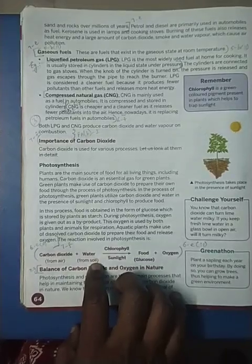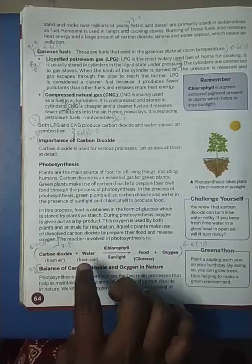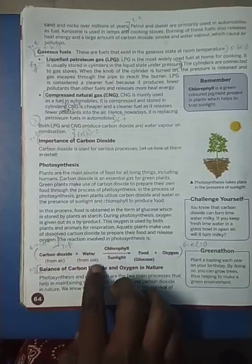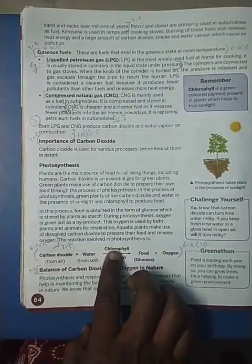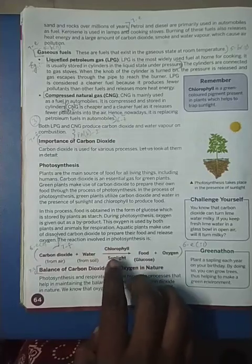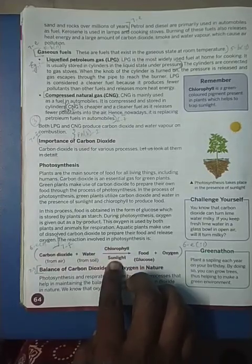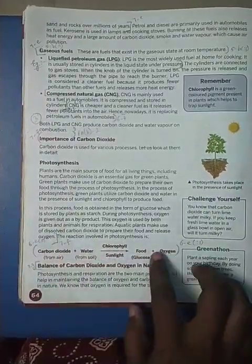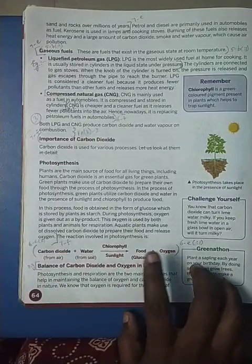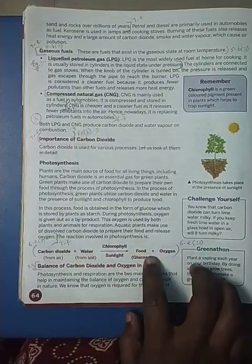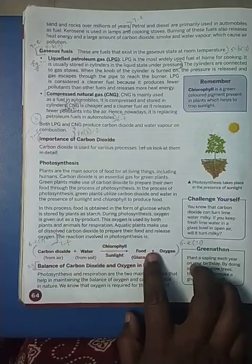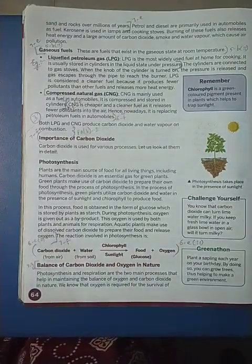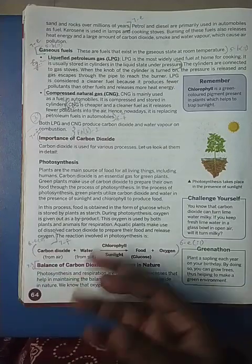The plant absorbs water from the soil and carbon dioxide from the air, which reacts with the chlorophyll pigment in the presence of sunlight. With all four components — carbon dioxide, water, chlorophyll, and sunlight — the plant produces glucose, the food for the plant to live. That is why plants are called autotrophs, because they can prepare their own food automatically.